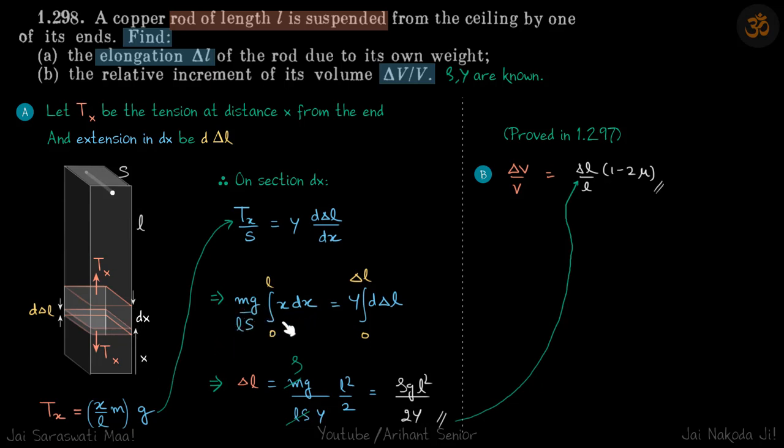This is simpler. You'll get the same answer, doesn't matter either way, but this is simpler. Solving this, you get the value of delta L equal to this, which is what we wanted. And if you put the delta L value here, you will get delta V by V, which is part B. All right.